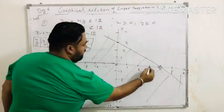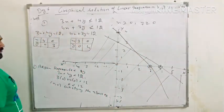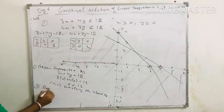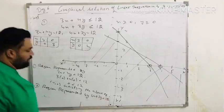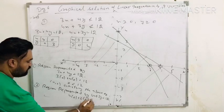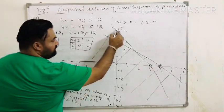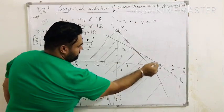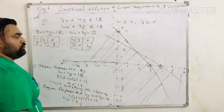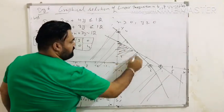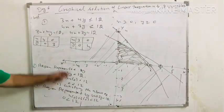Now we shift to the second equation 4x plus 3y less than or equal to 12. The solutions are 3,0 and 0,4. Draw a line through these points. The region represented by 4x plus 3y less than 12: again put x equals to 0, y equals to 0 — this gives 0 less than 12, so the point 0,0 satisfies. Since x greater than 0 and y greater than 0 represents the first quadrant, the common area in the first quadrant is the graphical solution of these equations.